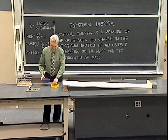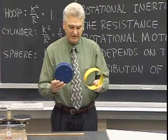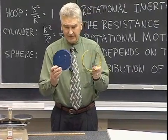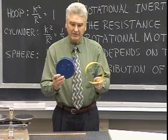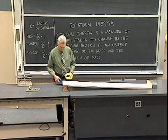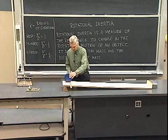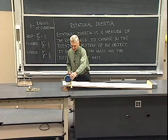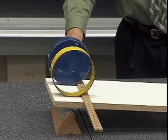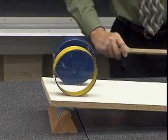I have two objects here — one's a hollow cylinder, we'll call it a hoop, and one's a solid cylinder. The radius of this cylinder is equal to the radius of this one, so they have the same radius, and it turns out that the mass of each is the same. I'm going to take these two cylinders and let them start from rest and roll down this inclined plane, and we're going to watch them roll down and see how they roll.